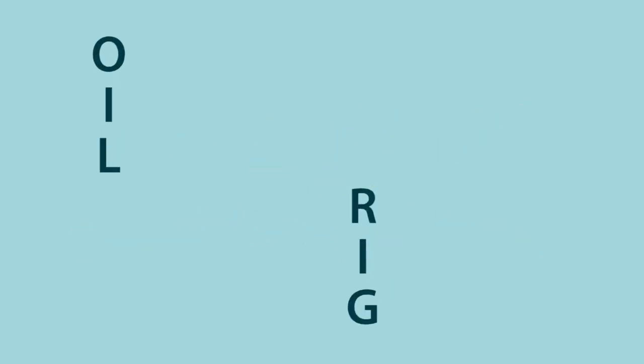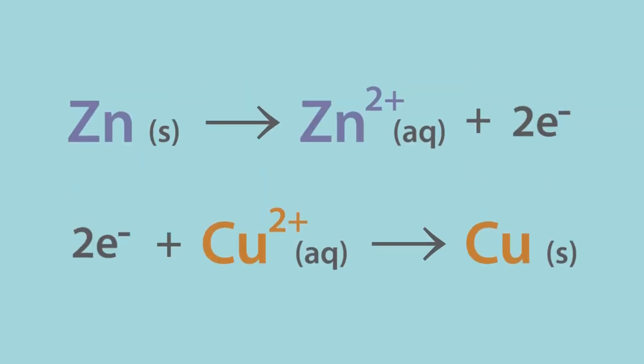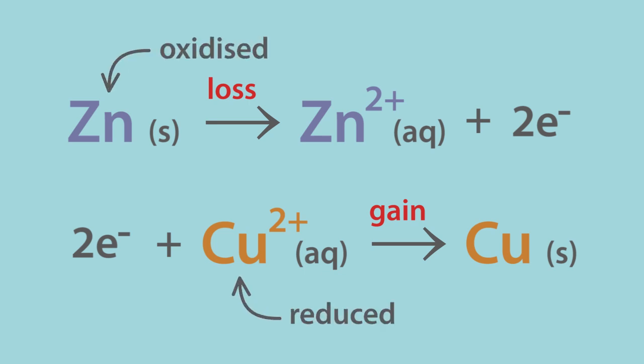According to OILRIG, oxidation is loss of electrons, reduction is gain of electrons. Which species is reduced and which is oxidized? Pause the video for a moment to think. Zinc loses two electrons and copper gains two electrons, so the copper ions are reduced and zinc metal is oxidized. Did you work that out?